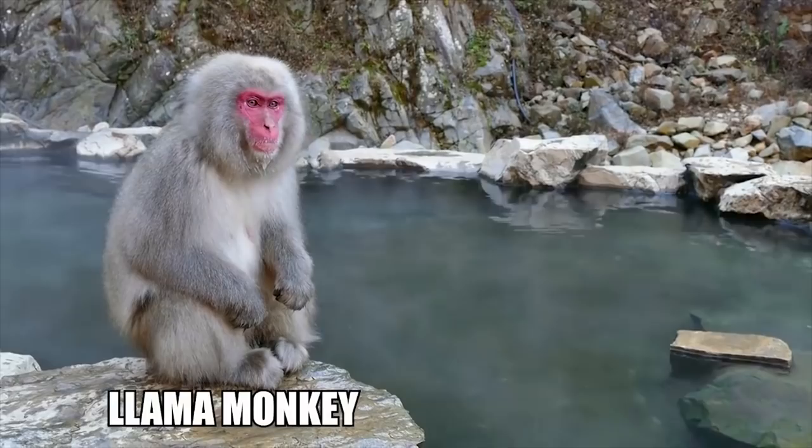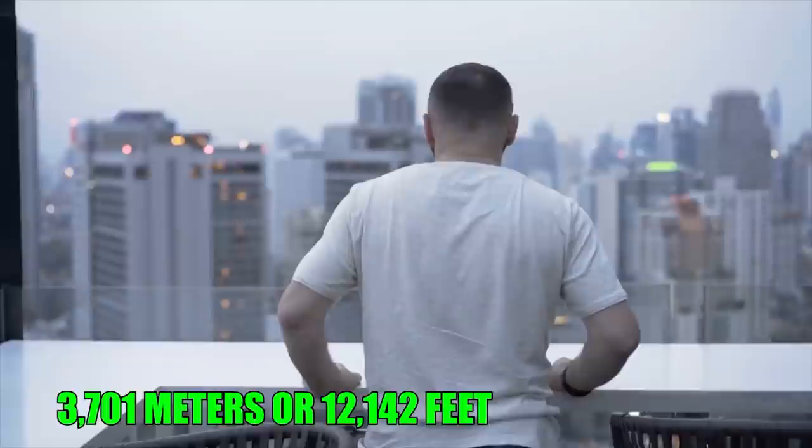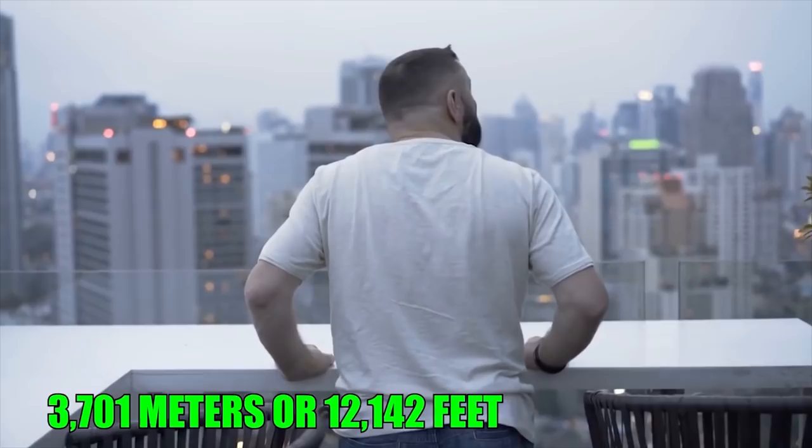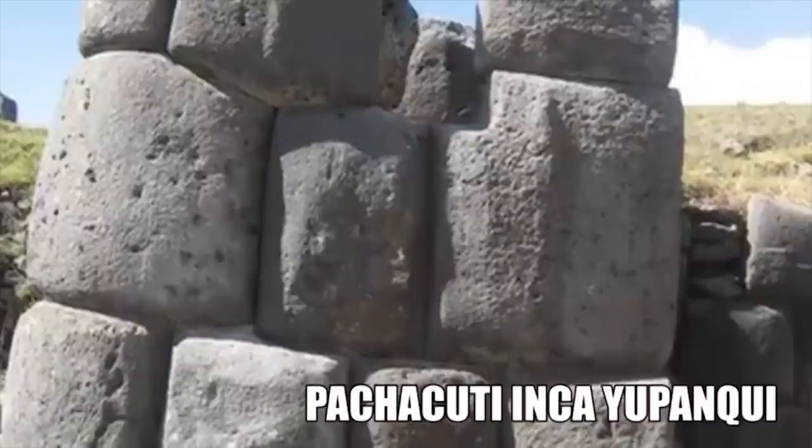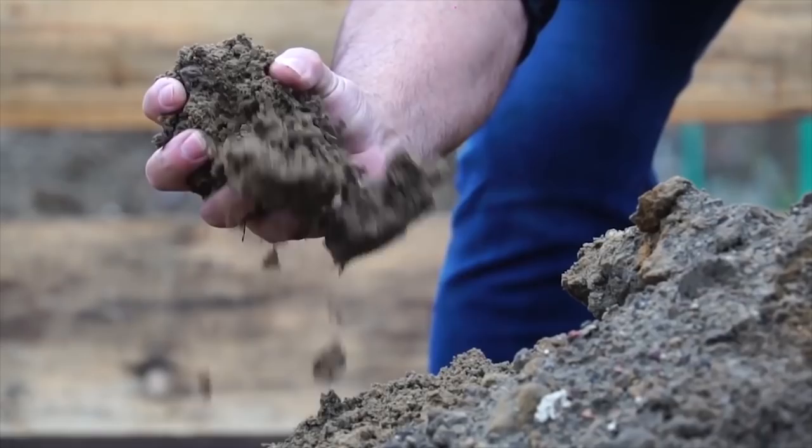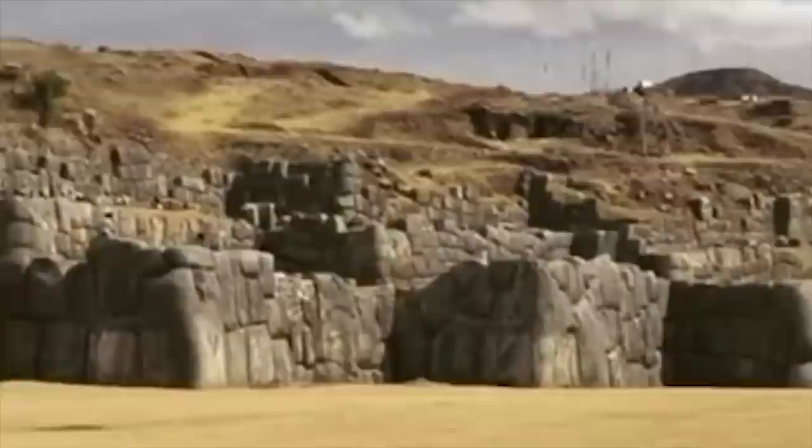Number 3, The Sacsayhuaman Walls. Sitting at an altitude of 3,701 meters or 12,142 feet, if you'd really like to make yourself feel tiny, the citadel of Sacsayhuaman is best known as the historic capital of the Inca Empire and the largest structure ever built by the Incas. Designed by four architects working under the supervision of the great Inca builder Pachacuti Inca Yupanqui, the Incas began building the citadel in the mid-12th century, using only mud and clay to form the first basic structures.